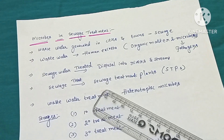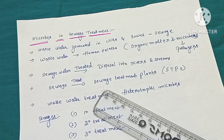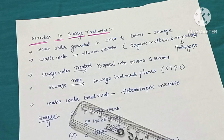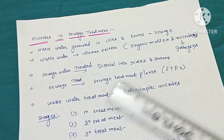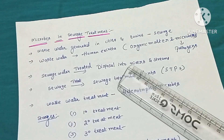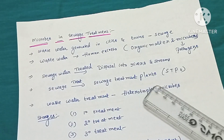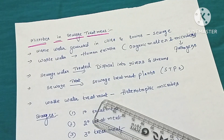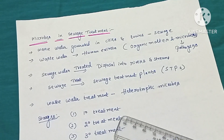The treatment of the waste water generated in cities or towns is called sewage treatment. Sewage treatment is conducted in sewage treatment plants. In the sewage treatment plants, the water is collected and treated properly before being released into the main water resources.